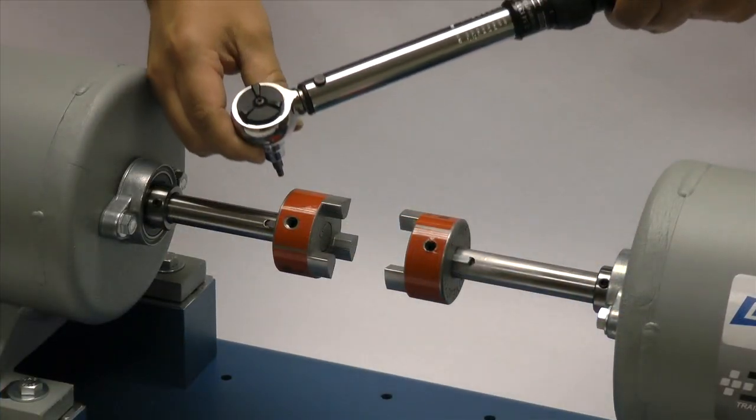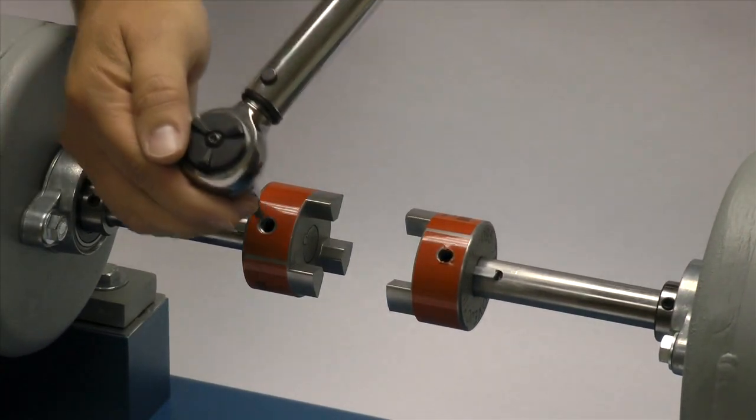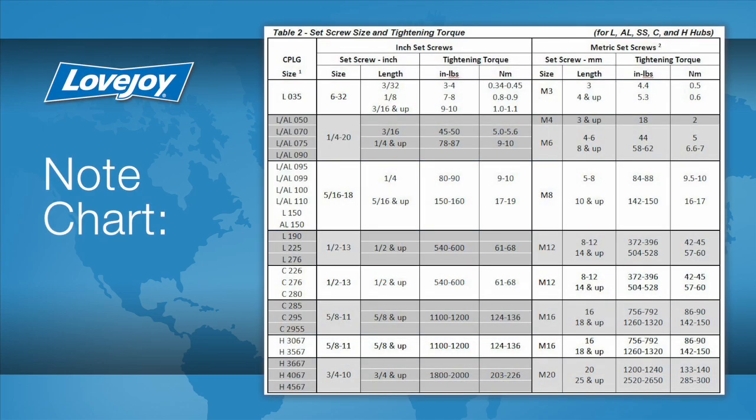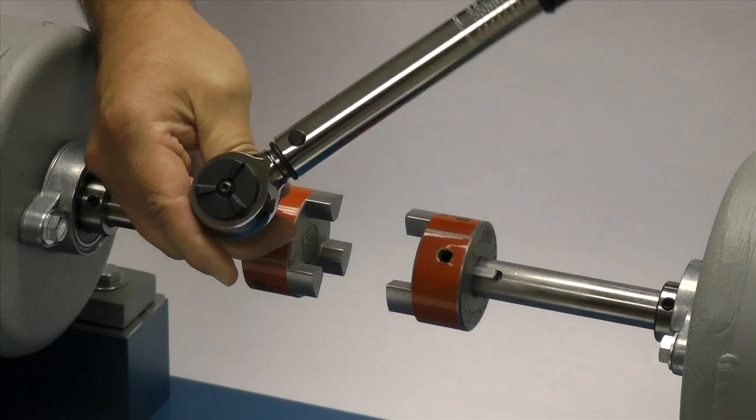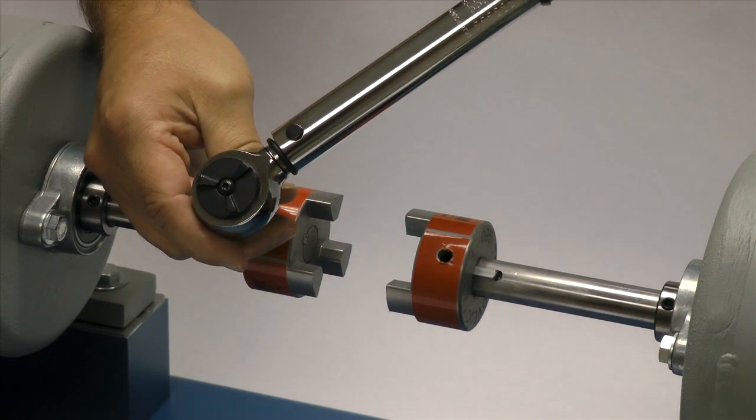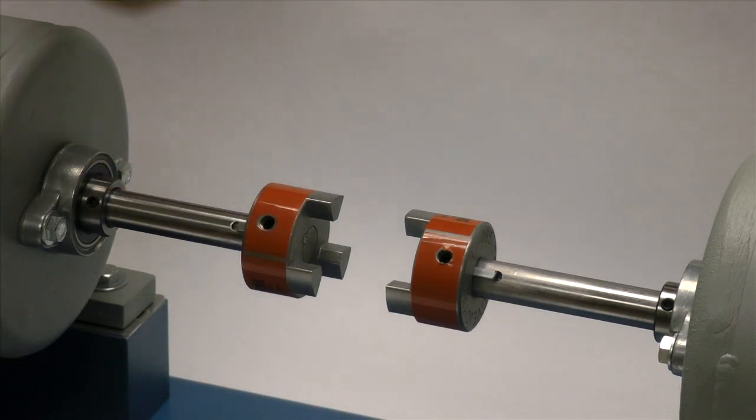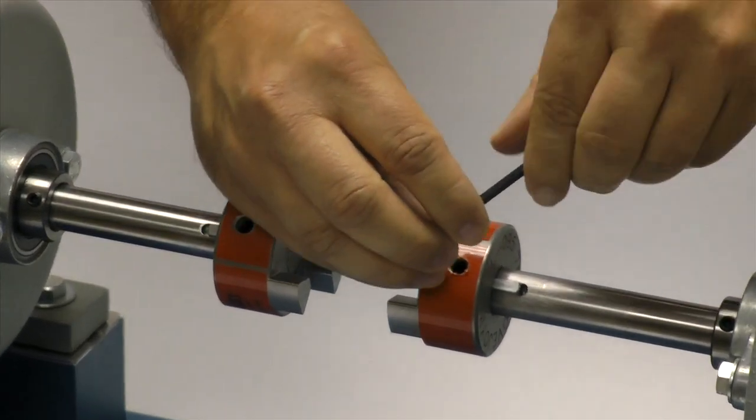The set screws should be tightened to the recommended torque settings using a calibrated torque wrench. The use of a torque wrench is important. If the set screws are not tightened properly, the hub could work loose and slide on the shaft. If the set screws are too tight, they could damage the key, the shaft or the hub. We will tighten the set screw in one hub to the required torque and the second we will lightly tighten to allow for a minor adjustment after the equipment is moved into place.